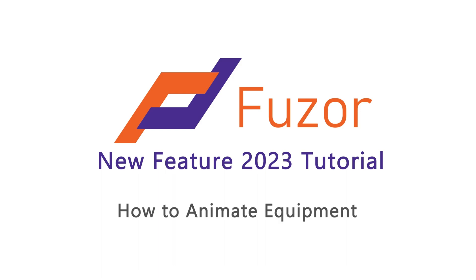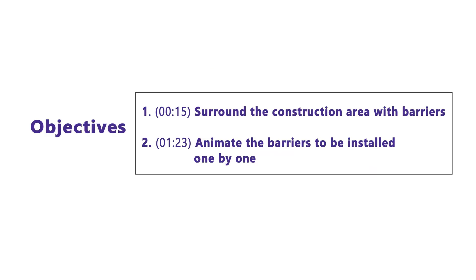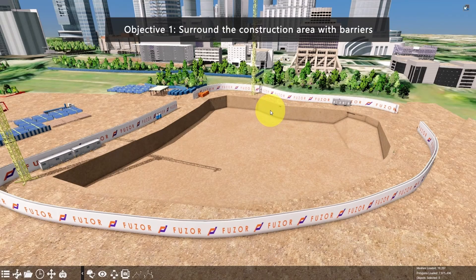This new feature 2023 tutorial video will teach you how to animate equipment. The objectives of the video are: first, to surround the construction area with barriers, and second, to animate them to be installed one by one. So for the first objective, we want to surround this construction area with barriers to avoid accidents.